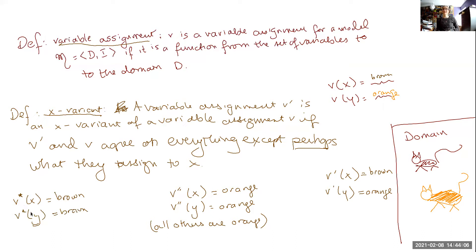v star is not an x variant of v, because it doesn't keep fixed what we assign to y. V star is, however, a y variant of v, because what is assigned to x hasn't changed, and what has assigned to y, potentially, and in this case, has.